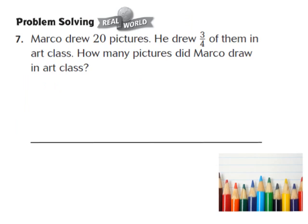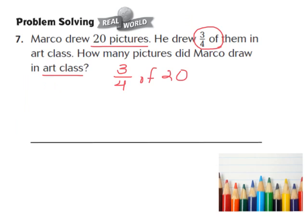Now let's take a look at question number 7 — one of our real world problem solving questions. It says Marco drew 20 pictures. He drew 3/4ths of them in art class. How many pictures did Marco draw in art class? We know that Marco drew 20 pictures and that he drew 3/4ths of them in art class. The word 'of' also represents multiplication, so my problem becomes 3/4ths times 20. My first step is to identify the denominator in 3/4ths, which is a 4 — so I divide 20 into 4 equal groups.